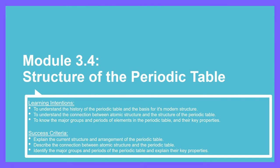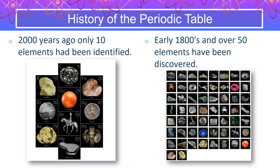Welcome to module 3.4. We're moving away from looking at the atom now. We're actually going to look at the periodic table — how we take atoms of different elements and arrange them into the periodic table. We're going to start off by looking at the history of the periodic table.